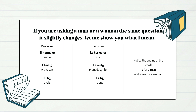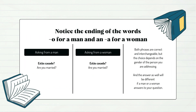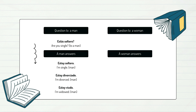So let's go back to the questions and watch the ending of the words. ¿Estás casado? — asked to a man. ¿Estás casada? — asked to a woman. Both phrases are correct and interchangeable, but the choice depends on the gender of the person you are addressing. A man would answer: Estoy casado. A woman would answer: Estoy casada. The ending is O for a man and A for a woman.